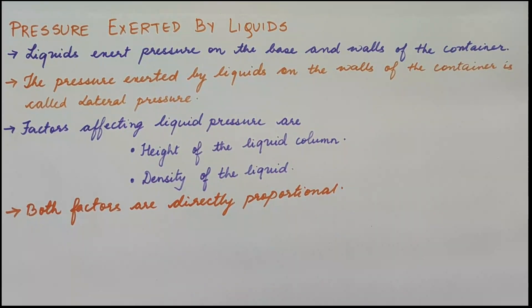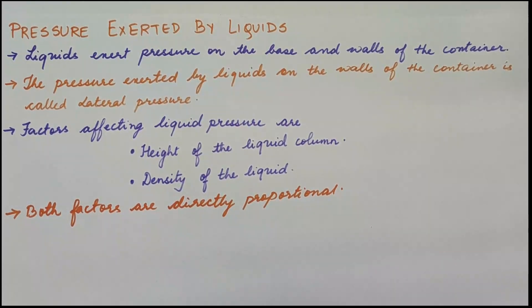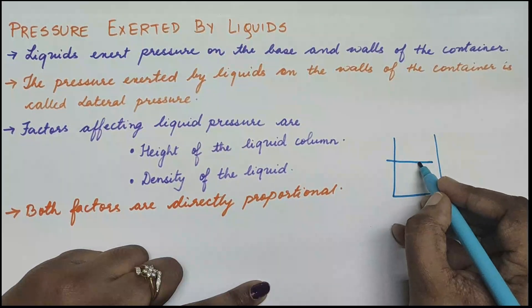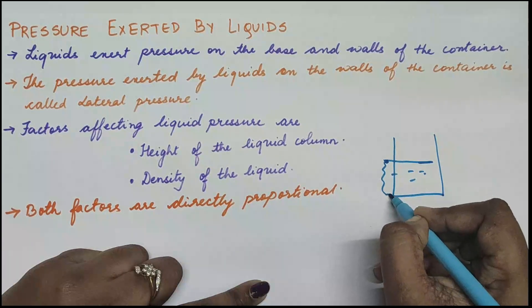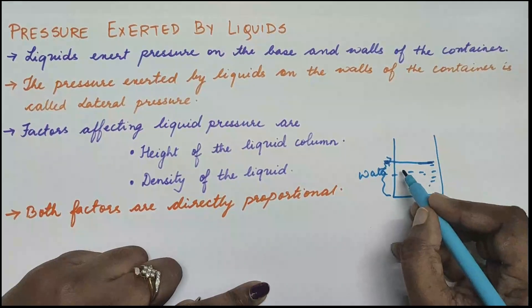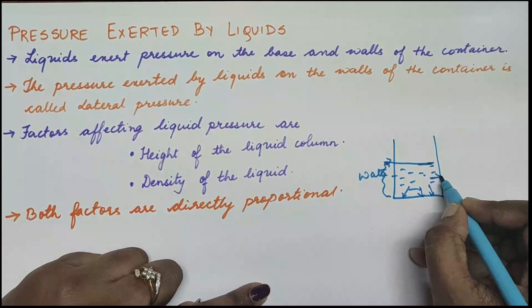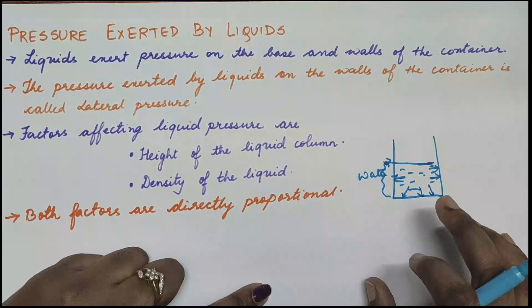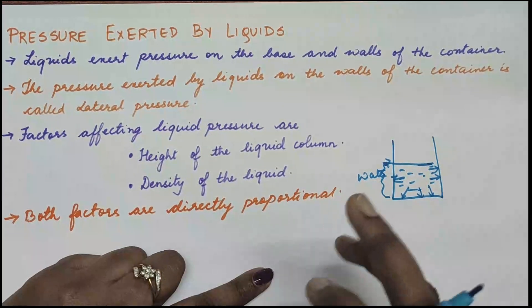When we talk about pressure in liquids, there are certain things to remember. Liquids do not have a fixed shape or size and they take the shape of the container. So when we pour a liquid in a container, it applies pressure on the base and the walls. Suppose this is my container and I have filled it with water — the liquid is exerting pressure on the base as well as on the walls of the container.